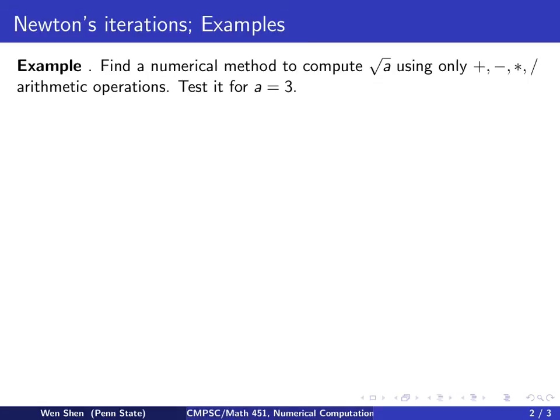So here's the problem. I want to find a numerical method to compute square root of a, a is just some value, using only plus, minus, multiply and divide, the four arithmetic operations. And test your method for a equal to 3.